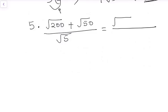The first thing we start with is the numerator. We look for the factor of 200. That will be 100 times 2. Then we look for the factor of 50. That will be 25 times 2 over root 5.